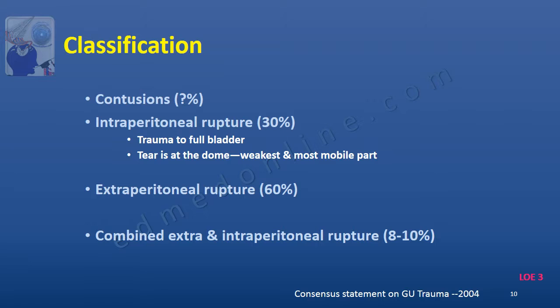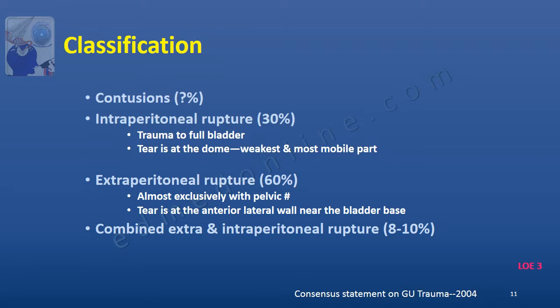Intraperitoneal rupture tends to occur when there is trauma to the full bladder, and when this force is exerted the tear tends to occur at the dome, which is the weakest and the most mobile part of the bladder. Extraperitoneal rupture almost exclusively tends to occur with pelvic fracture, and the tear is at the anterior lateral wall more close to the bladder base.